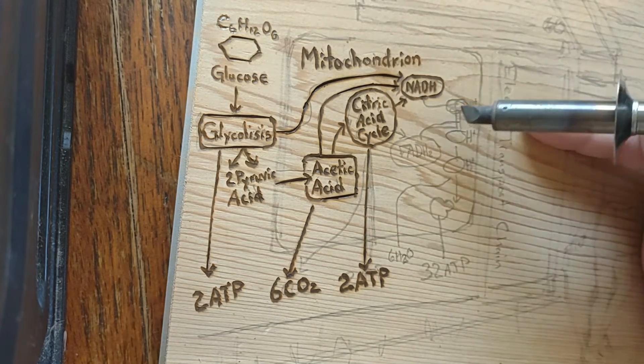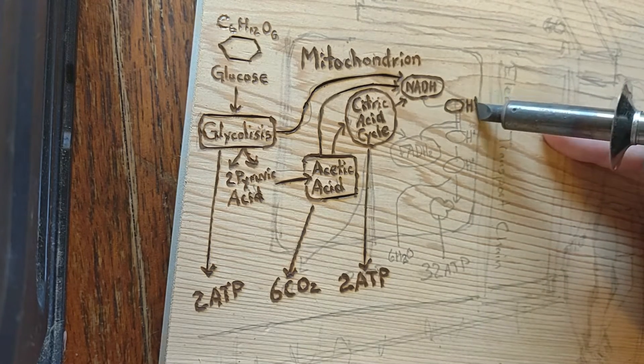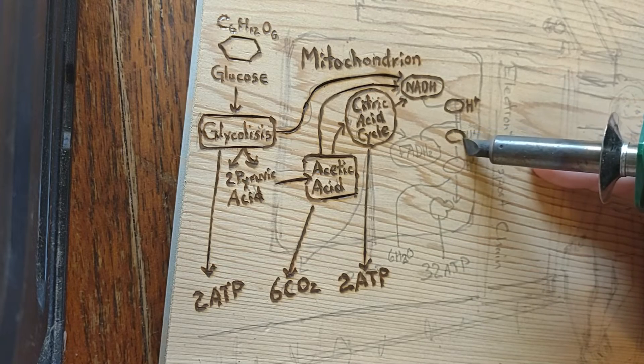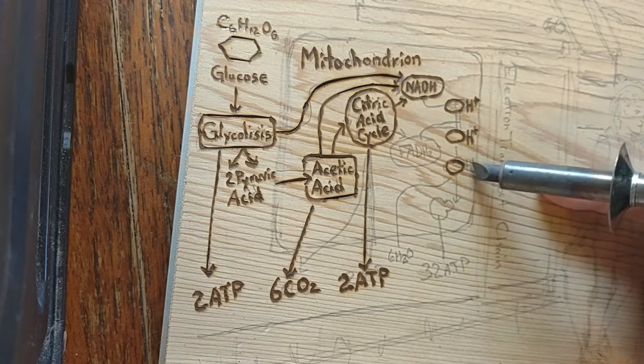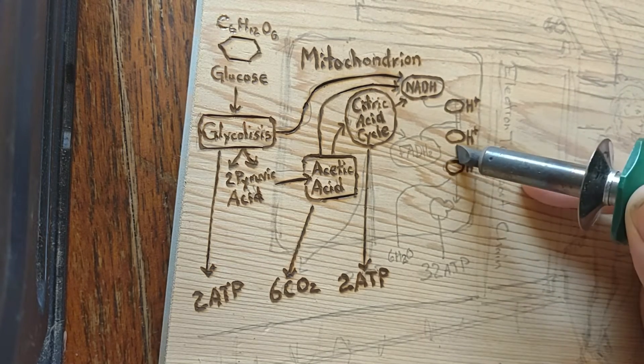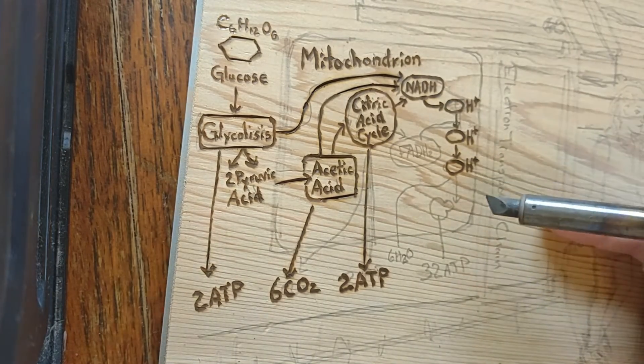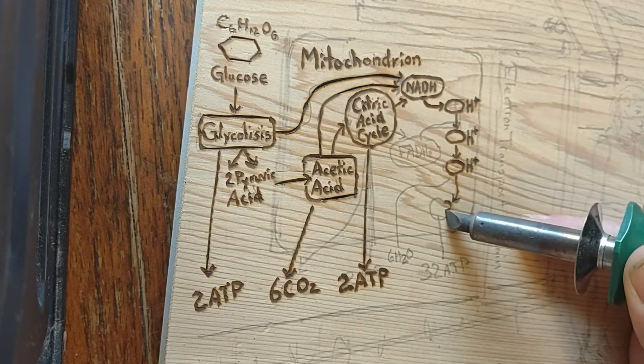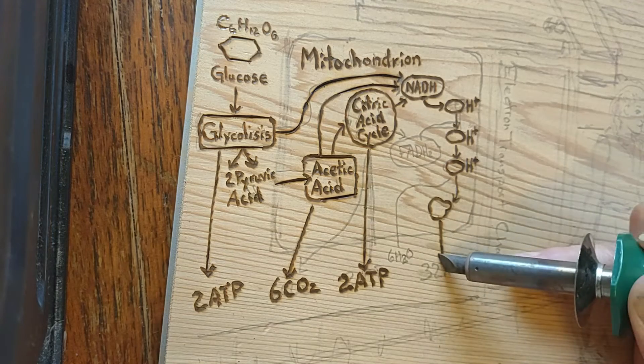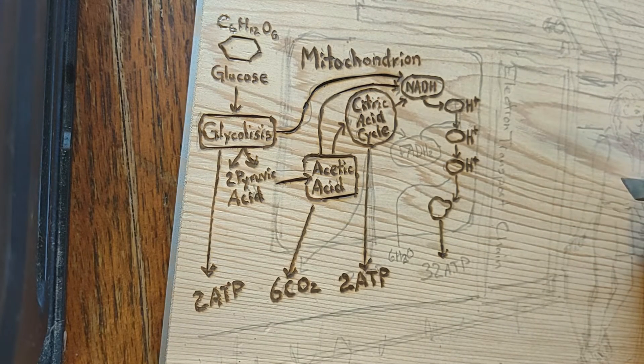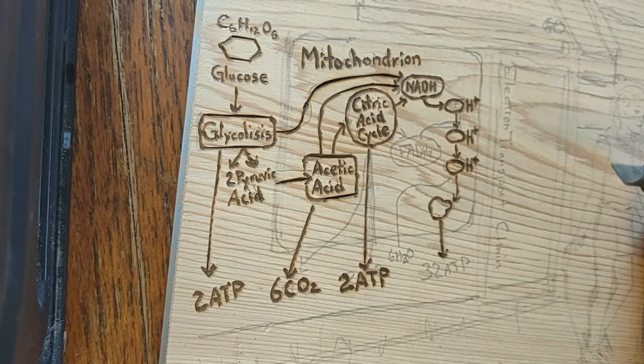NADH can be used by the electron transport chain to create further ATP as part of oxidative phosphorylation. To fully oxidize the equivalent of one glucose molecule, two acetyl-CoA must be metabolized by the Krebs cycle. Two low-energy waste products, H2O and CO2, are created during this cycle. The citric acid cycle is an eight-step process involving 18 different enzymes and coenzymes.